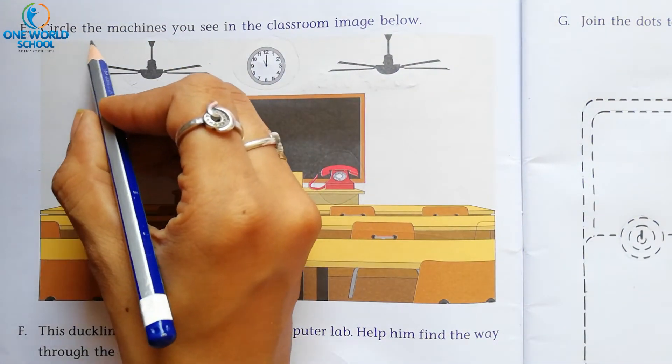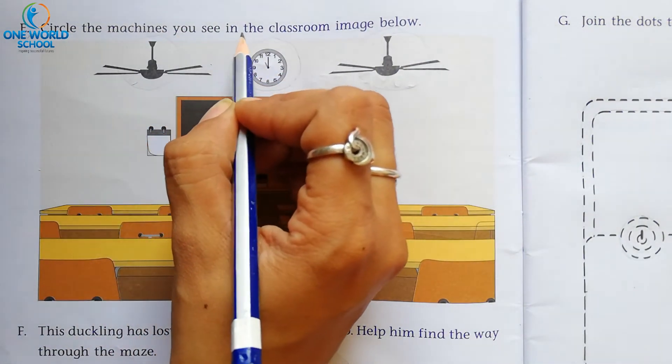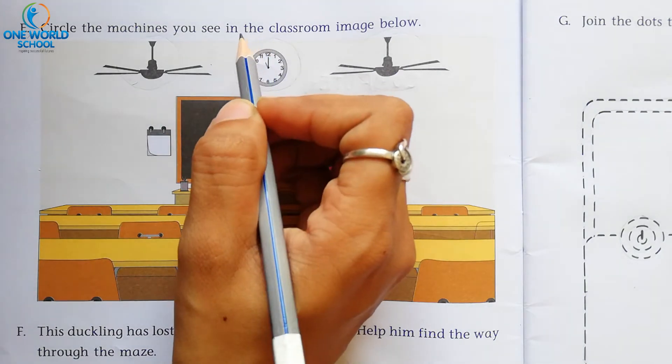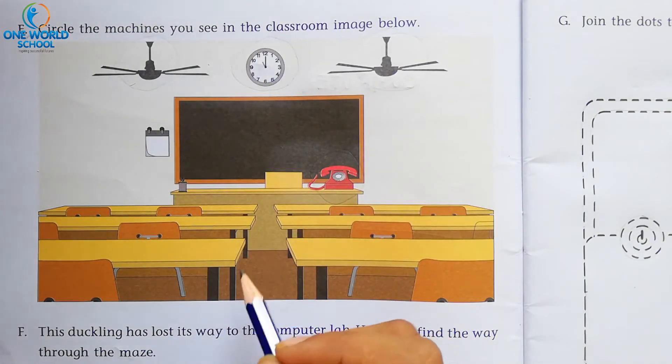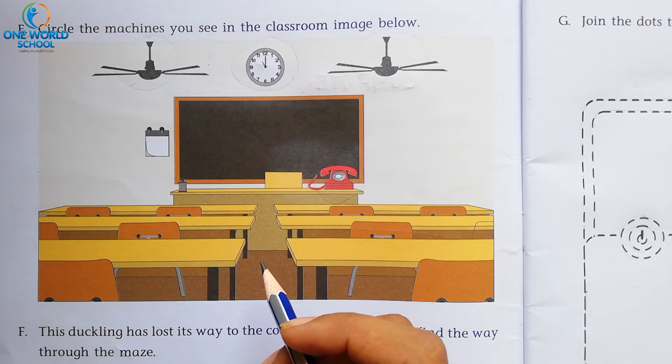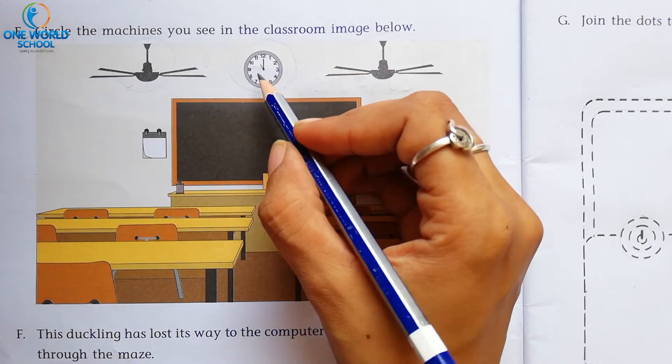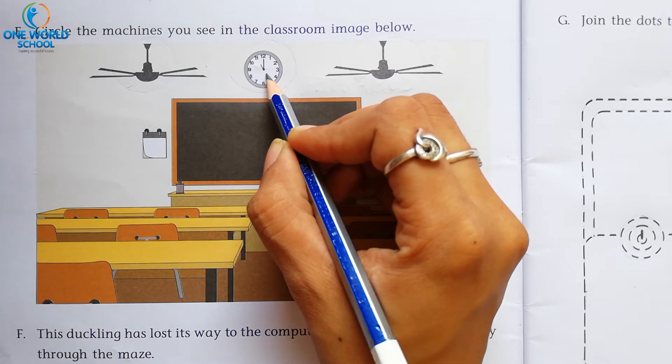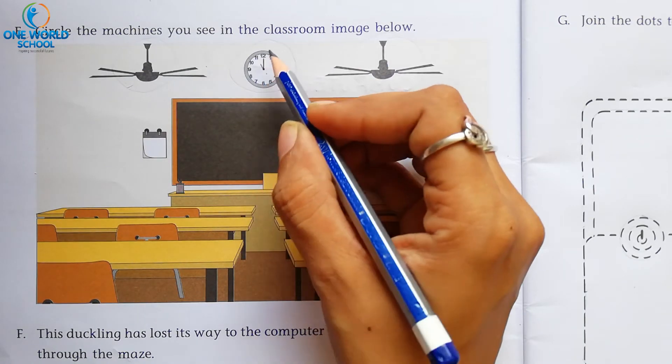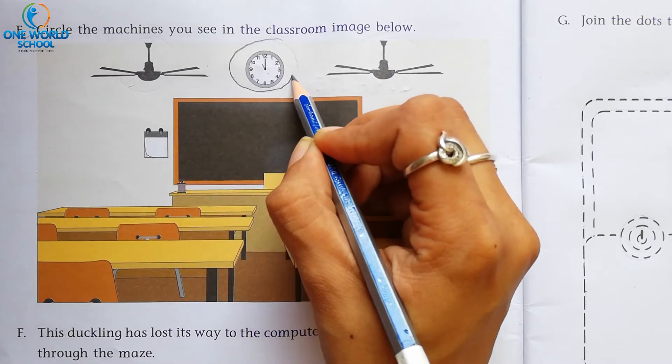Question number E. Circle the machine you see in the classroom. Here is the picture. You have to find the machine and then you have to circle it. The first clock. Clock machine is not. Yes. So, we have to circle it.